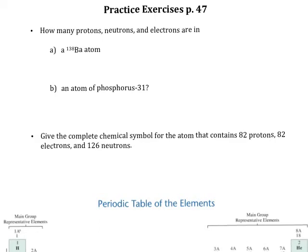This is a practice exercise from page 47 of the textbook. We're going to look at determining the number of protons, neutrons, and electrons in an atom, and also writing a symbol once we know how many protons, neutrons, and electrons are in an atom.